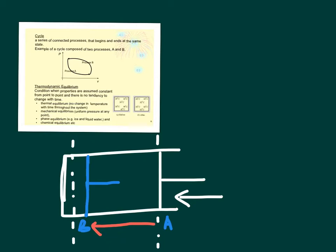And if we can retract this piston back to its place, it's going to be back here. So this process from B to A can be considered as another process. So let's say A to B is number one and B to A is number two.